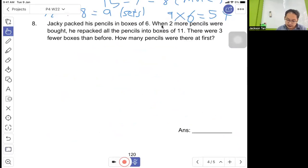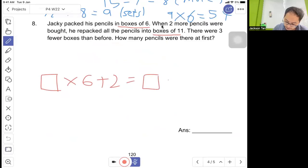Question 8: Jacky packed his pencils in boxes of 6. When 2 more pencils were bought, he repacked all the pencils into boxes of 11. There were 3 fewer boxes than before. How many pencils were there at first? From boxes of 6 become boxes of 11, now there were 3 fewer boxes. You can do guess and check. How many boxes of 6 plus 2 equals boxes of 11, making sure there are 3 fewer boxes.